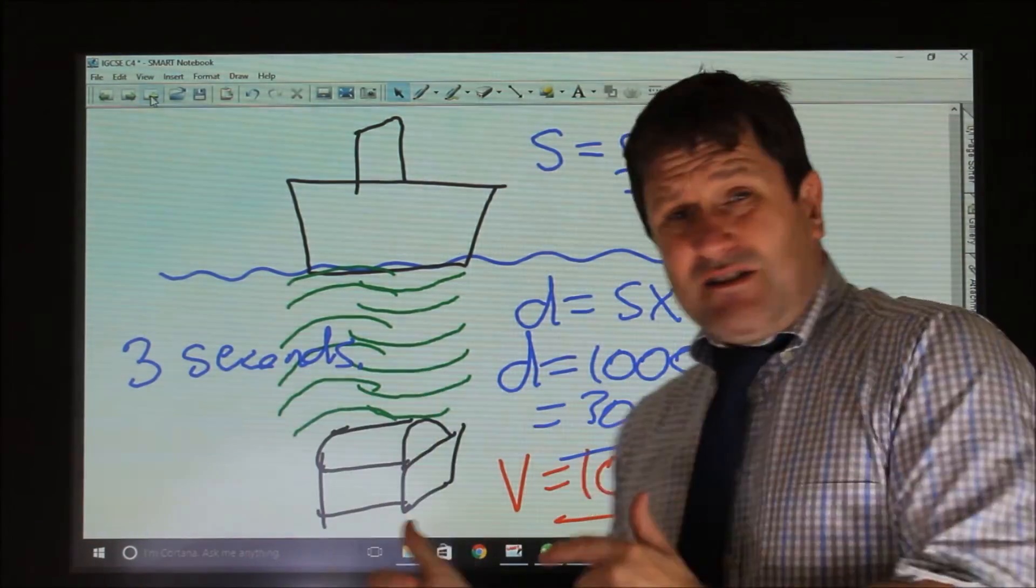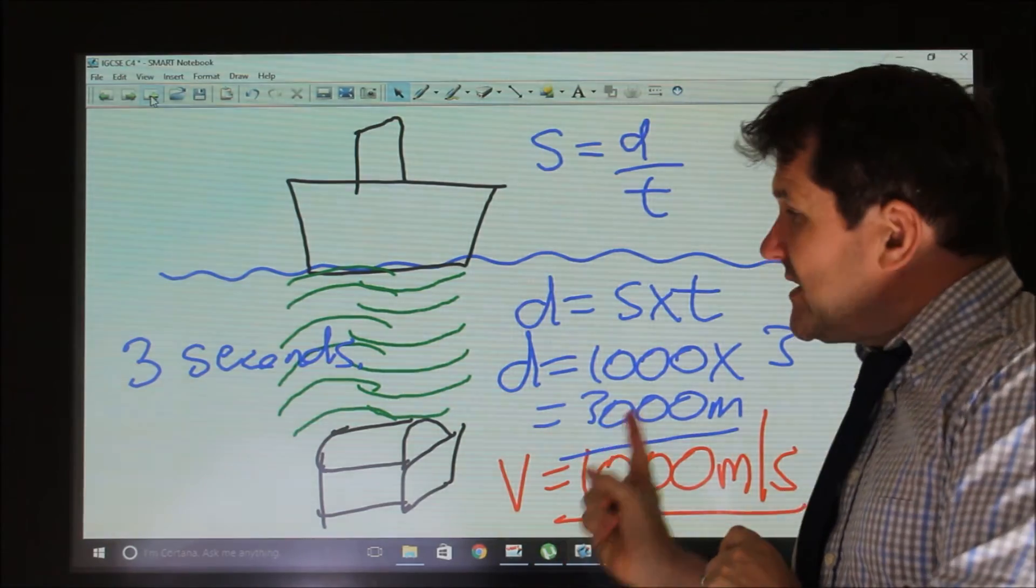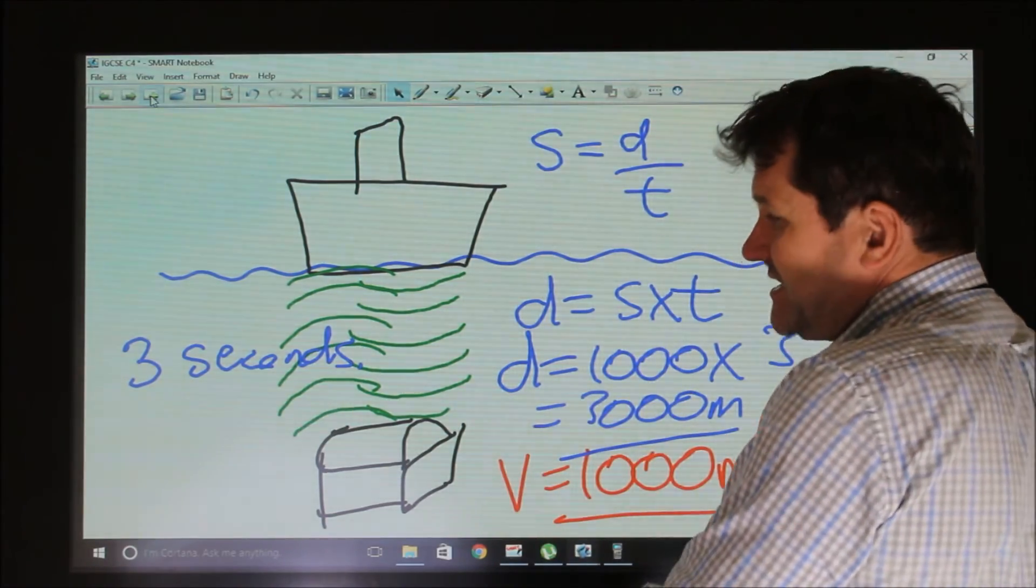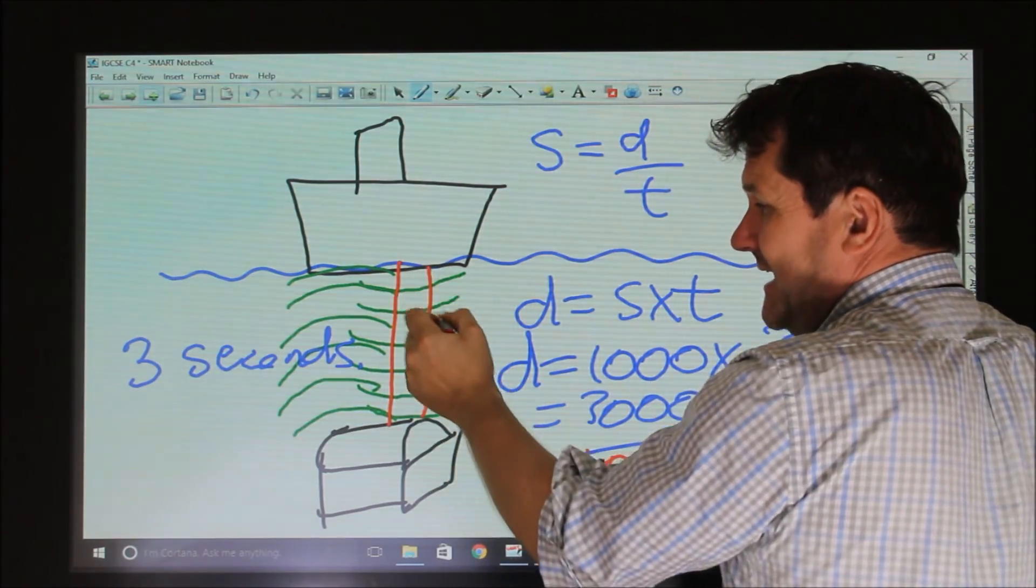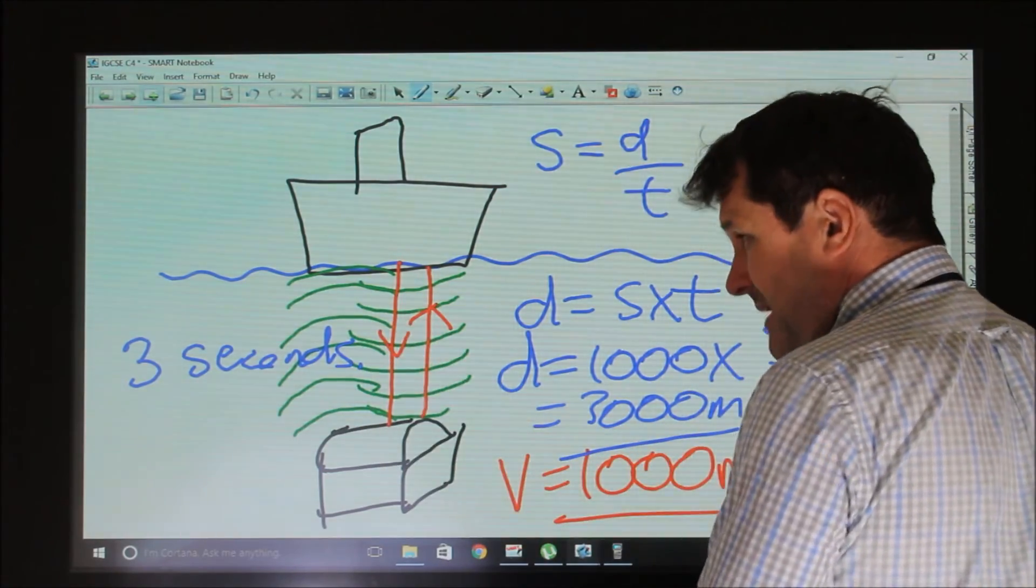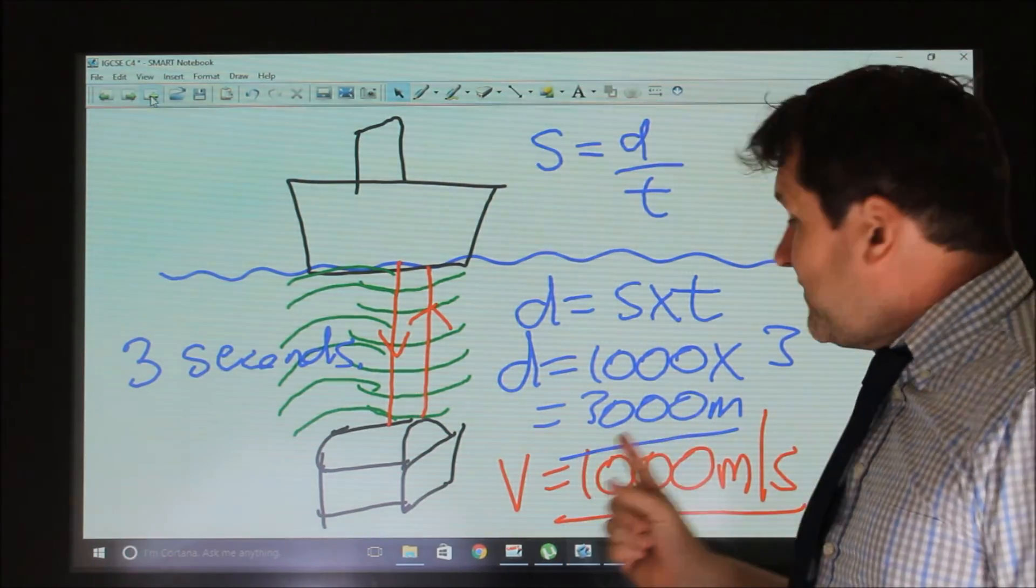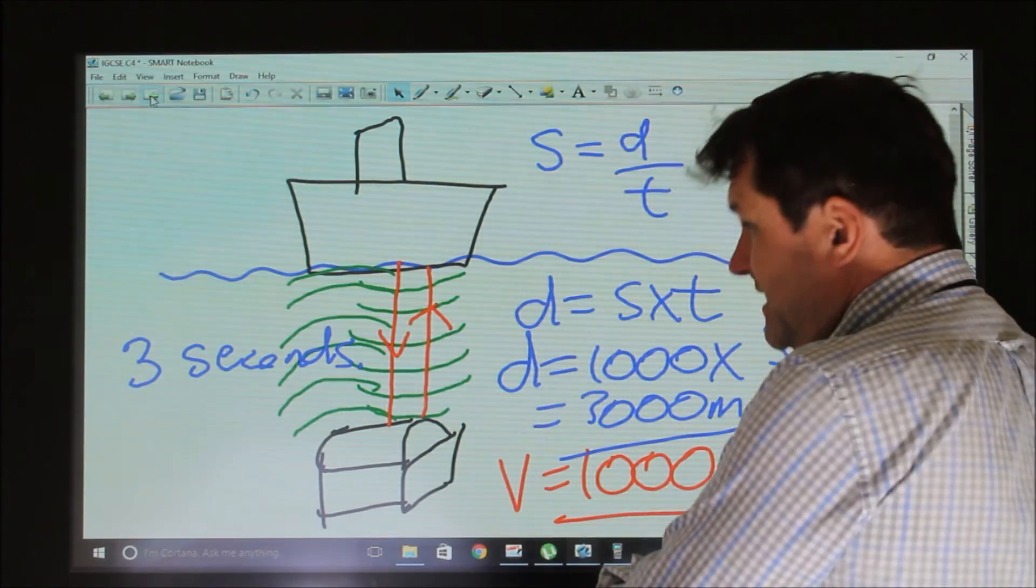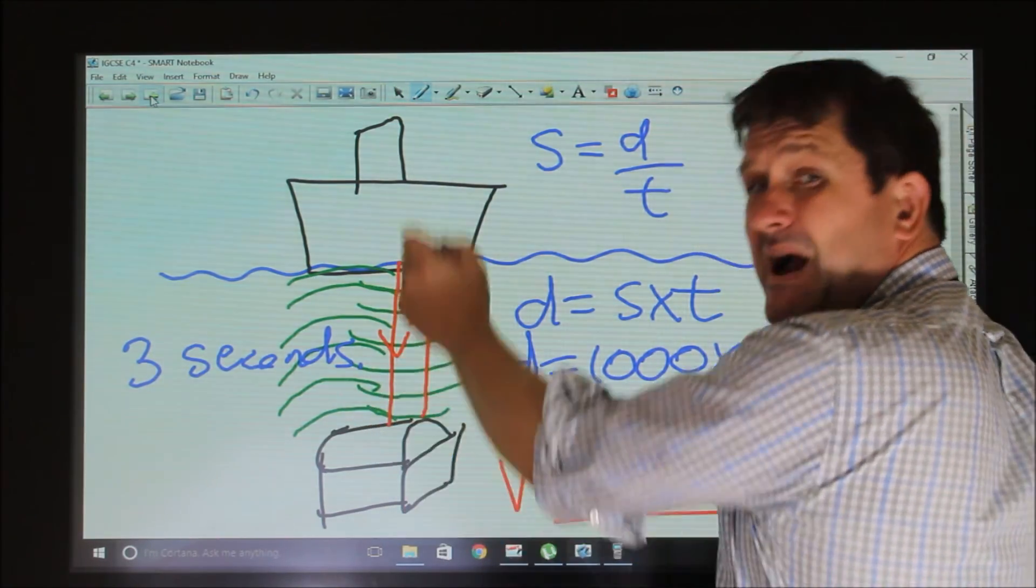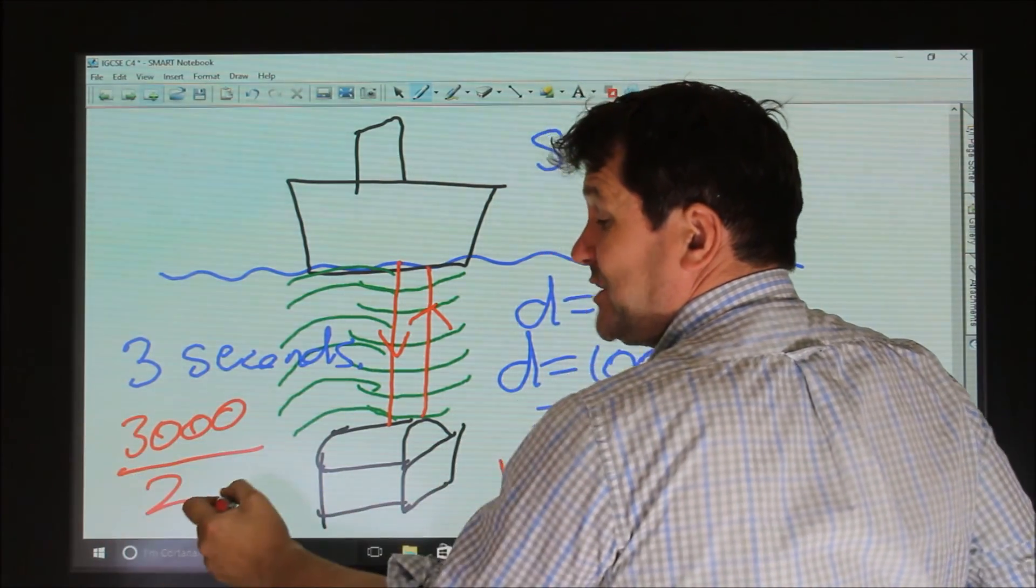Now, this answer is not correct. Because students typically will do this because they forget that the sound wave travelled there and back again. And it's important to remember the total distance travelled by the sound wave may have been 3,000 metres, but the depth of this, because it went there and back, is 3,000 divided by 2.